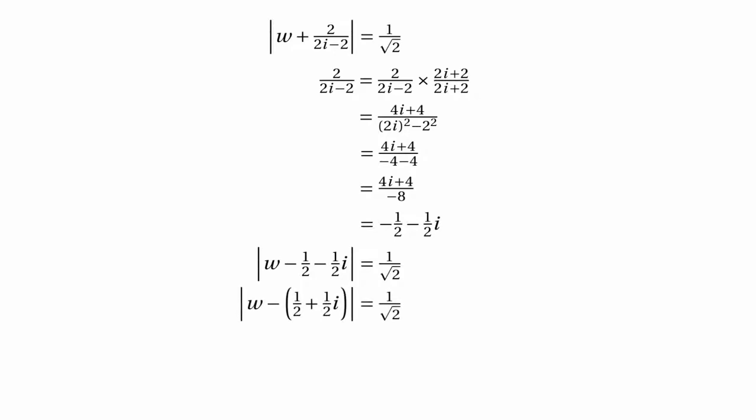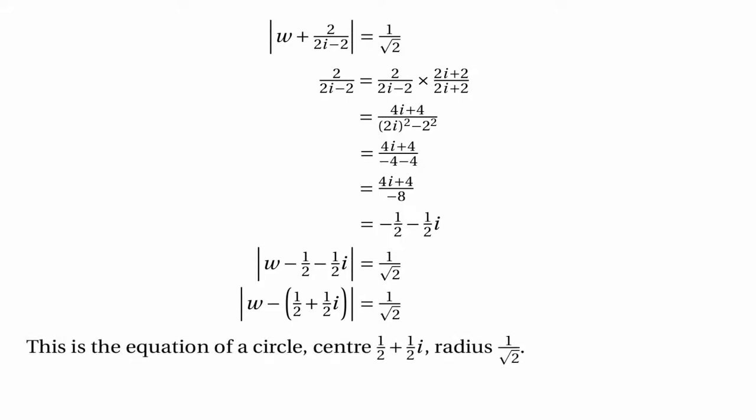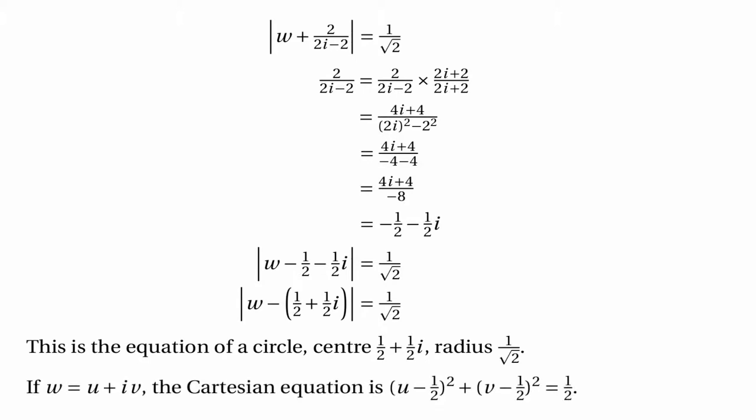Now 2/(2i−2) simplifies by multiplying by (2i+2)/(2i+2), giving (4i+4)/(−4−4), or (4i+4)/(−8), which is minus 1/2 minus (1/2)i. So the locus is |w minus 1/2 minus (1/2)i| equals 1/√2, or equivalently |w minus (1/2 + (1/2)i)| equals 1/√2. This is the equation of a circle with centre 1/2 plus (1/2)i and radius 1/√2. Writing w as u plus iv, the Cartesian equation is (u − 1/2)² plus (v − 1/2)² equals 1/2.